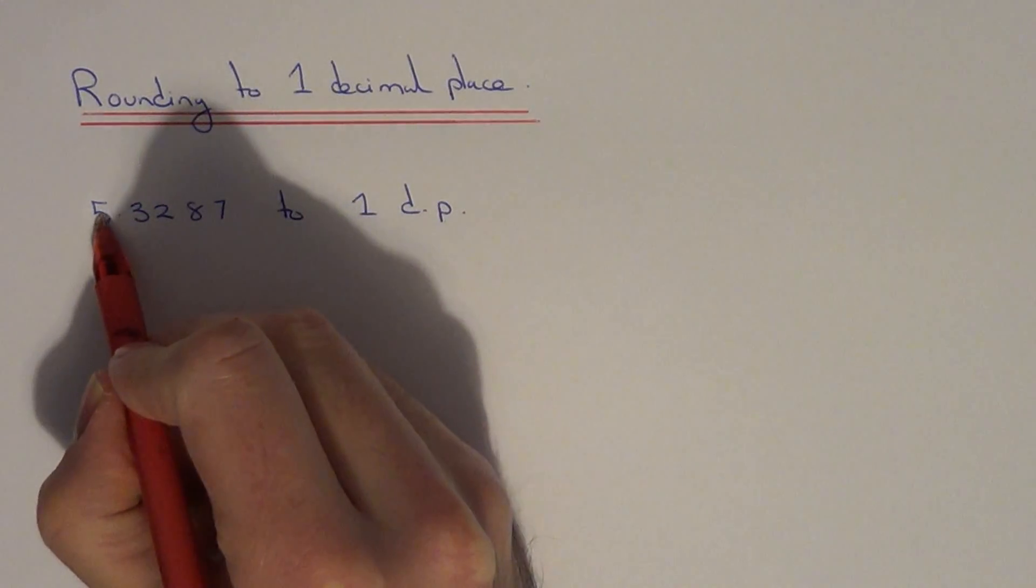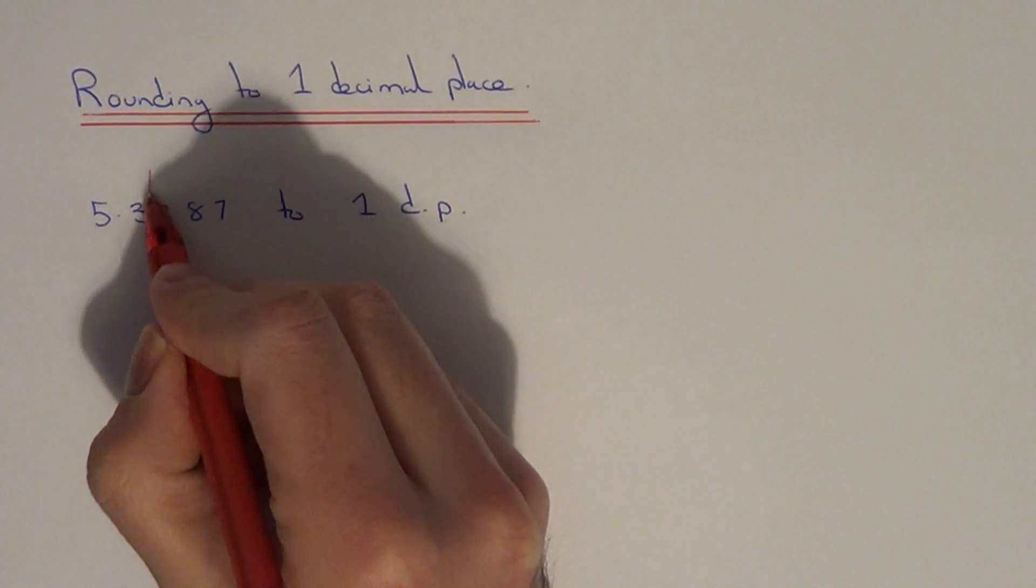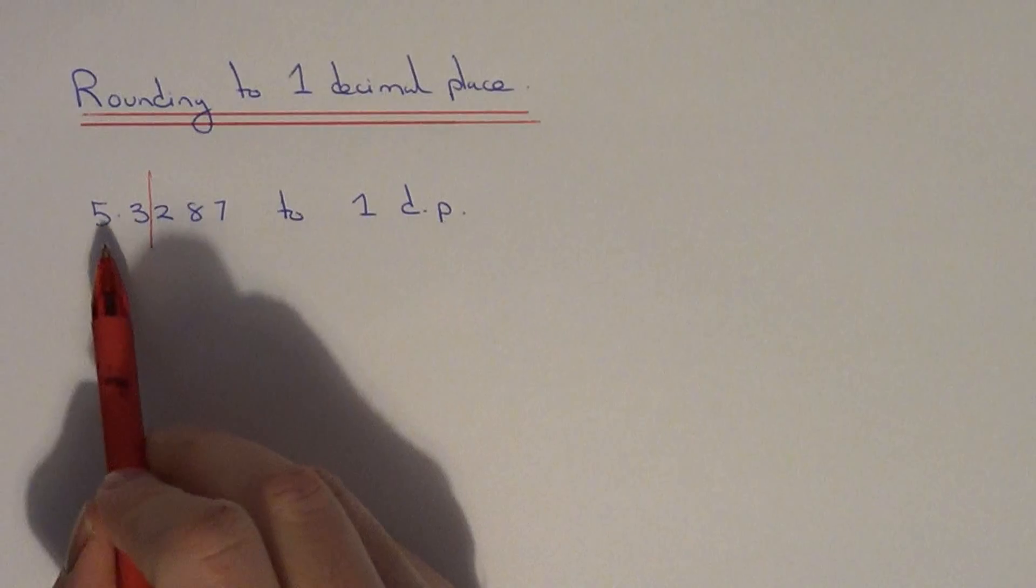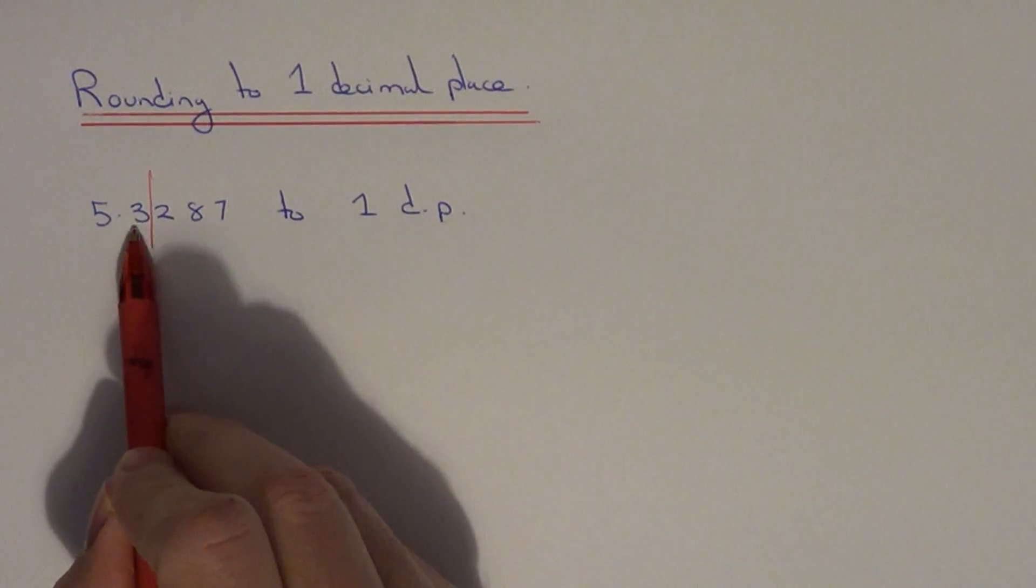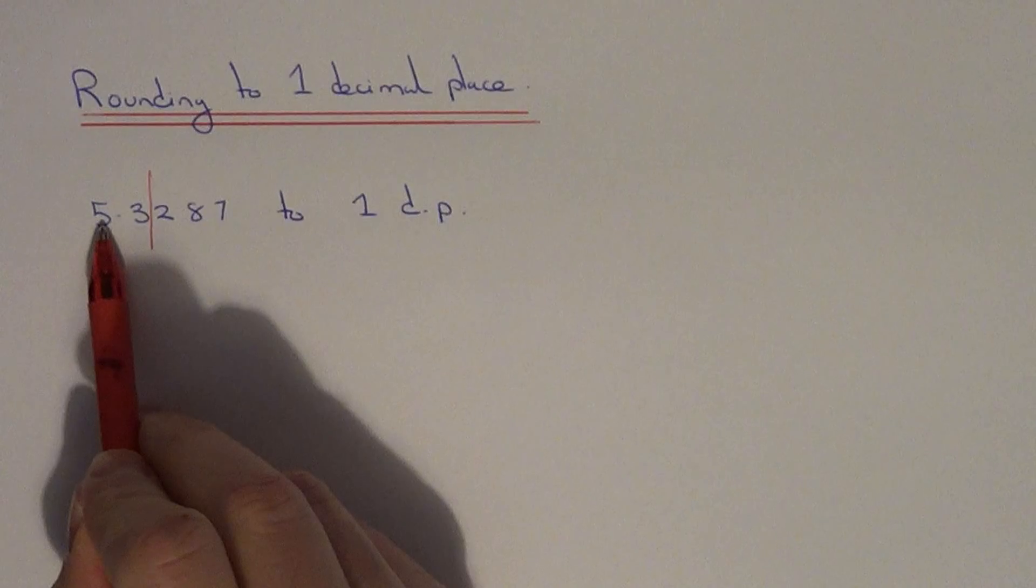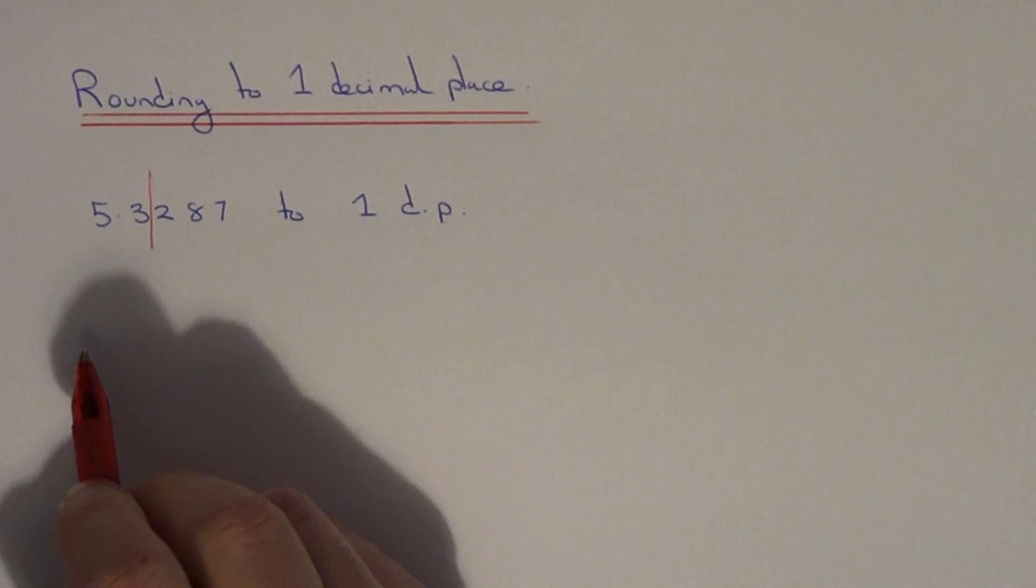All we need to do is cut the number off here so we have one number only after the decimal point. We have two options: we can either round the number down to 5.3 or we can round the number up to 5.4.